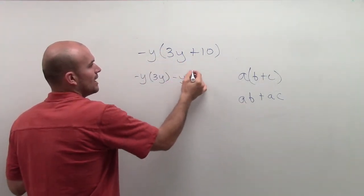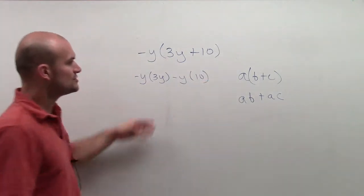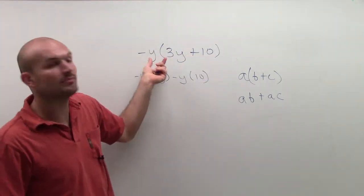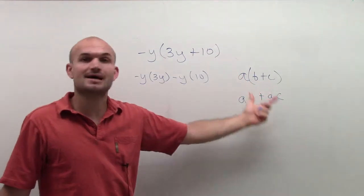And then again, negative y times 10. Notice how I multiplied that number outside my parentheses to both terms inside the parentheses.